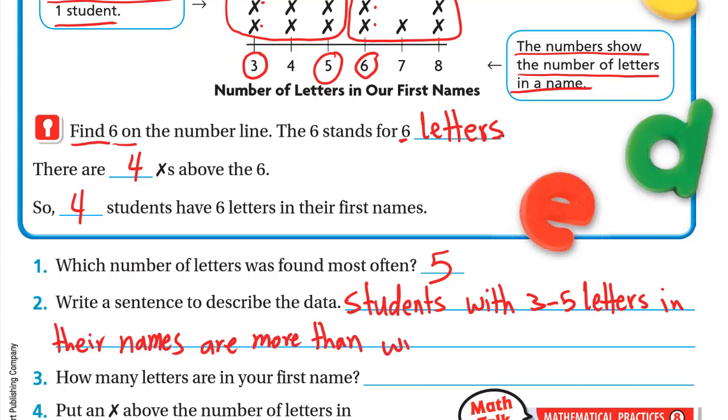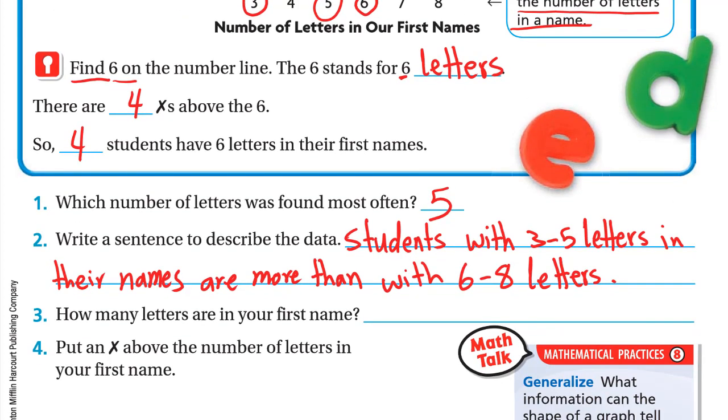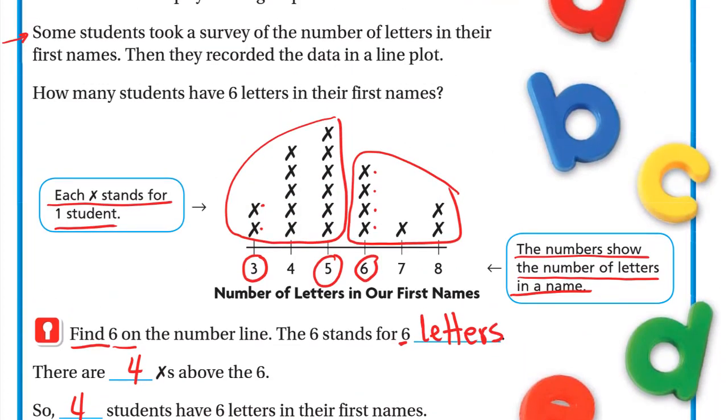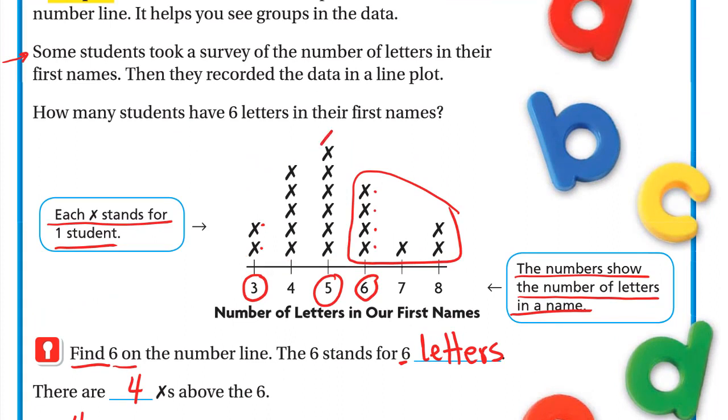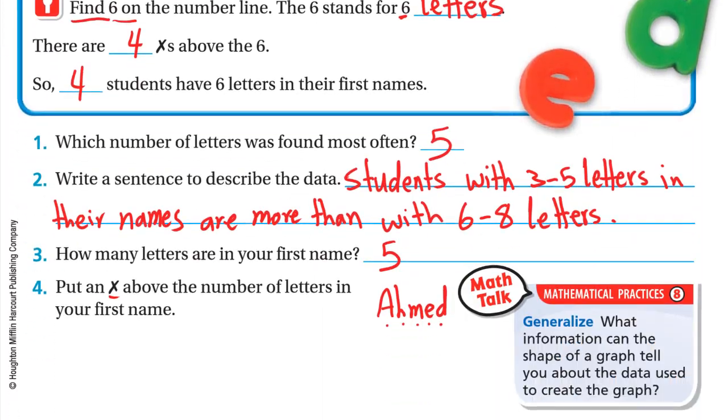Number three: How many letters are in your first name? This question depends on your first name. For example, for myself, my name is Ahmed. Ahmed is one, two, three, four, five letters, so I just write five. If your name has four letters you write four. Number four: Put an X above the number of letters in your first name. My first name has five letters, so I go here to five and I write just one X.